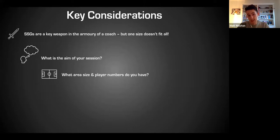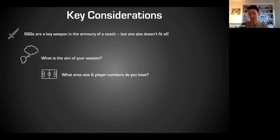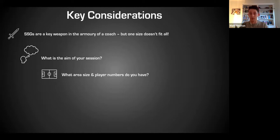Consider your available area size and player numbers carefully, as these can change unexpectedly - especially in football, where you might lose players to the first team at any moment. This is where understanding relative area size becomes really valuable: if you're doing a 5v5 and lose two players, you can quickly adjust your pitch size to maintain a similar stimulus for the remaining players.